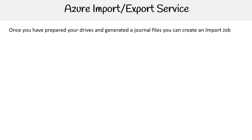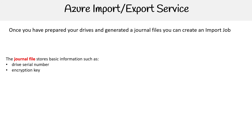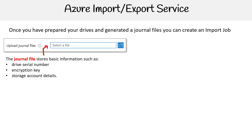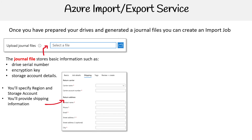Once you have prepared your drives and generated the journal file, you're ready to create your import job. The journal file stores basic information such as the drive serial number, the encryption key, and the storage account details. You'll upload that file, specify a region and storage account, and provide shipping address information to complete the import job.